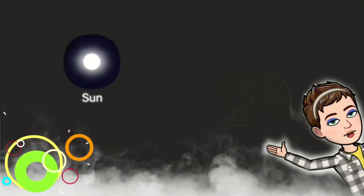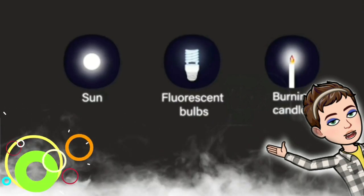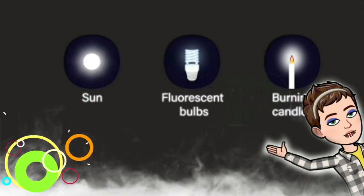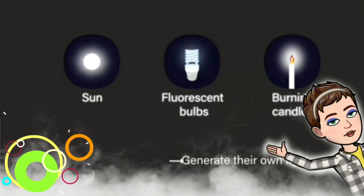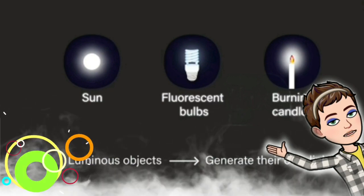Some objects can generate their own light. For instance, the sun, the fluorescent bulb, the burning candle can generate their own light. The objects which generate their own light are called luminous objects.